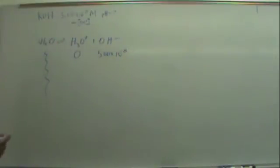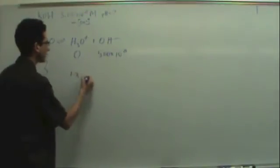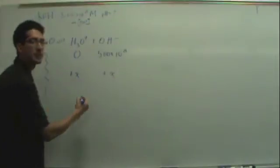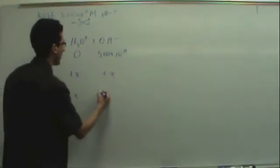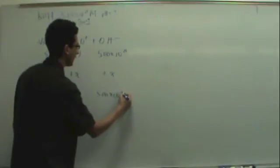So it has to shift to the right, towards the zero. So plus x, plus x, so we have x and 5.00 times 10 to the minus 8 plus x.